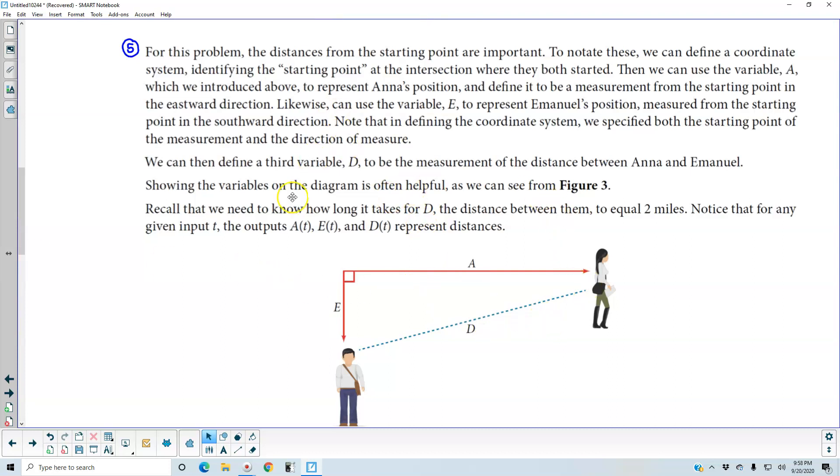And recall that we need to know how long it takes for D, the distance between them, to equal 2 miles. And notice that for any given input t, the outputs A(t), E(t), and D(t) all are going to represent distances.